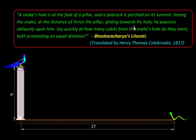Gliding towards its hole, so the snake is scurrying towards its hole. He, meaning the peacock, pounces obliquely upon him. So this is how the two creatures move. The snake is scurrying towards its hole and the peacock is pouncing on him, going obliquely like this.